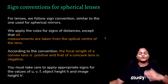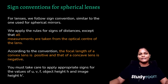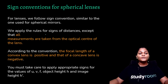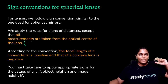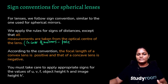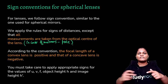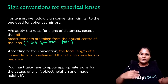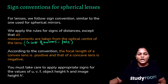Now we do sign convention for lenses, which is similar to spherical mirrors. For lenses, all measurements are taken from the optical center, just as for mirrors they are taken from the pole. The focal length of a convex lens is positive and that of a concave lens is negative — this is very important for numericals.